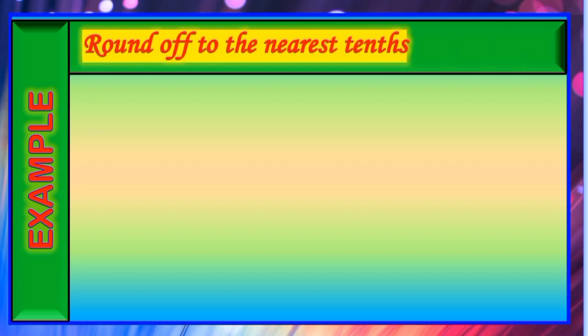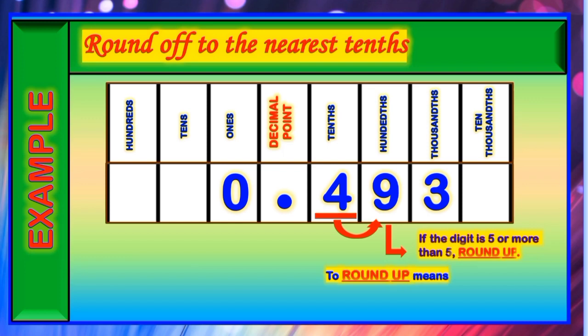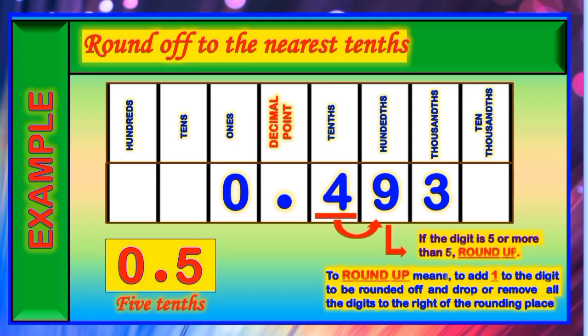Let us have another example rounding off to the nearest tenths. The decimal number is 0 and 493 thousandths. The digit in the rounding place is the digit 4, and the digit to its right is the digit 9. The digit 9 is more than 5, therefore we are going to round up — we add 1 to the digit 4, so 4 becomes 5, and we remove the digits 9 and 3. The rounded number is 5 tenths.